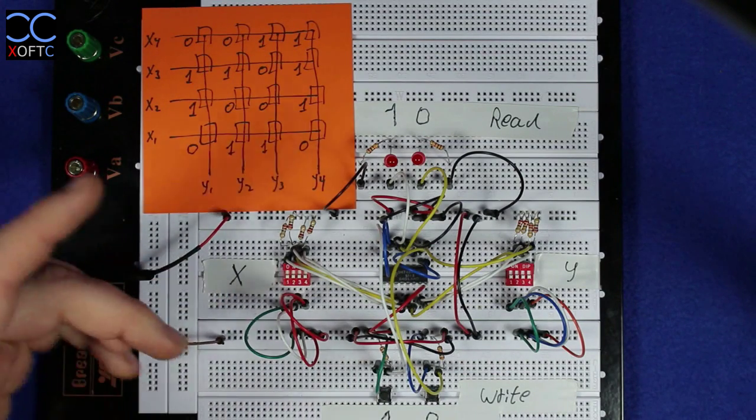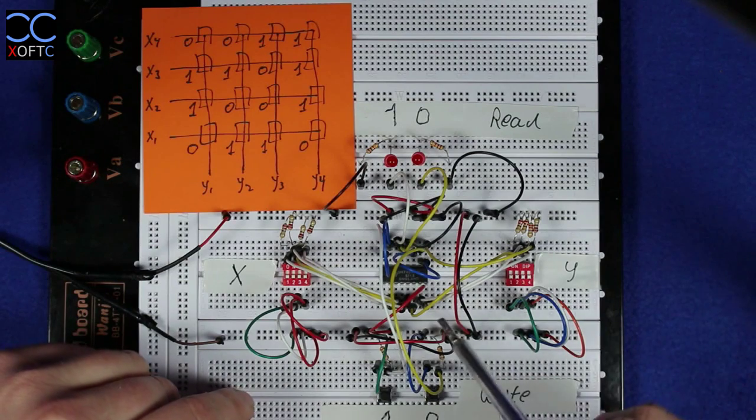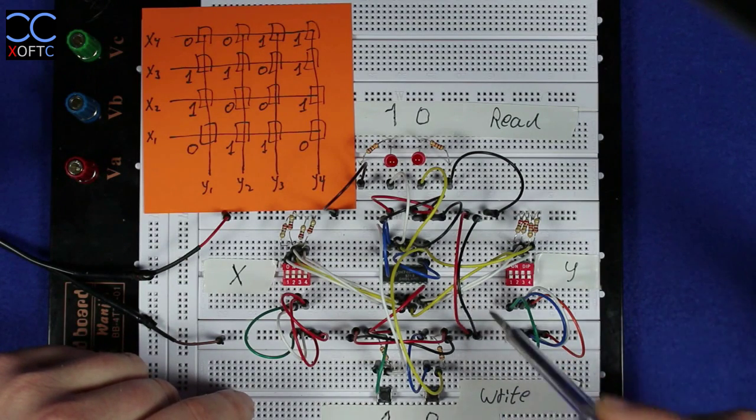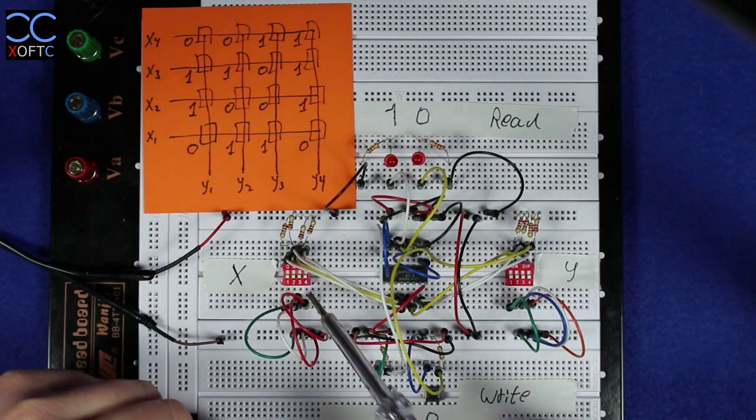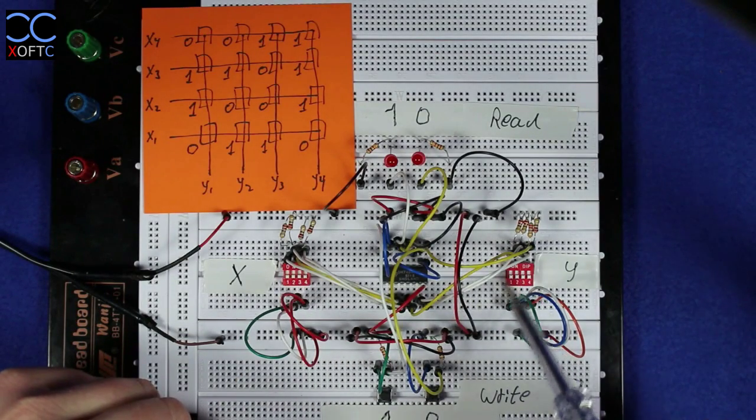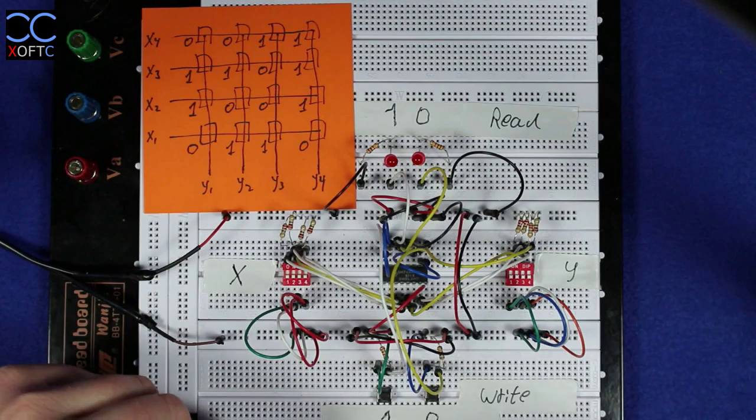So right now our memory has been powered on, and when you power on a random access memory, all the flip-flops go into a random state. If you just start going through the memory, you'll get random values that you didn't put inside them.